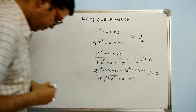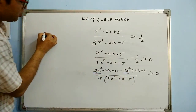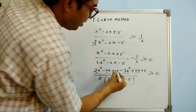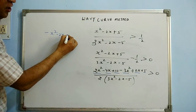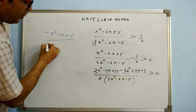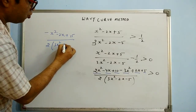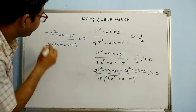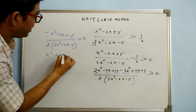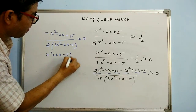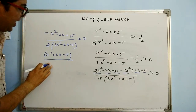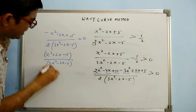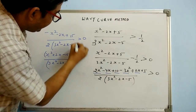Solving further, the numerator simplifies to -x² - 2x + 15, with denominator 2(3x² - 2x - 5) ≥ 0. Taking minus common from the numerator changes the sign: (x² + 2x - 15) / (2(3x² - 2x - 5)) ≤ 0.